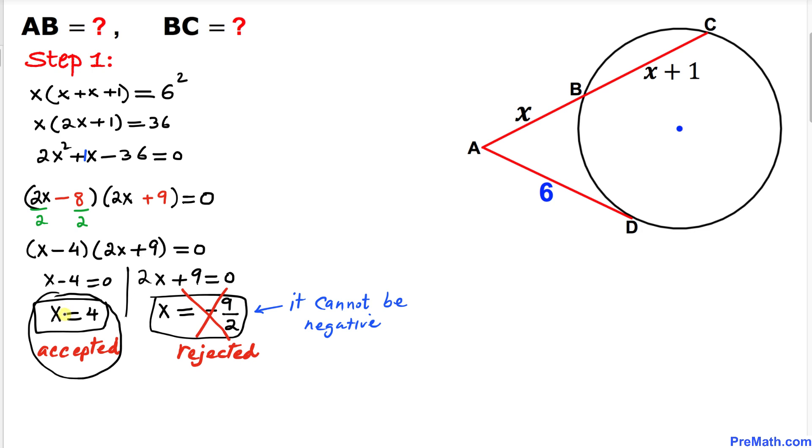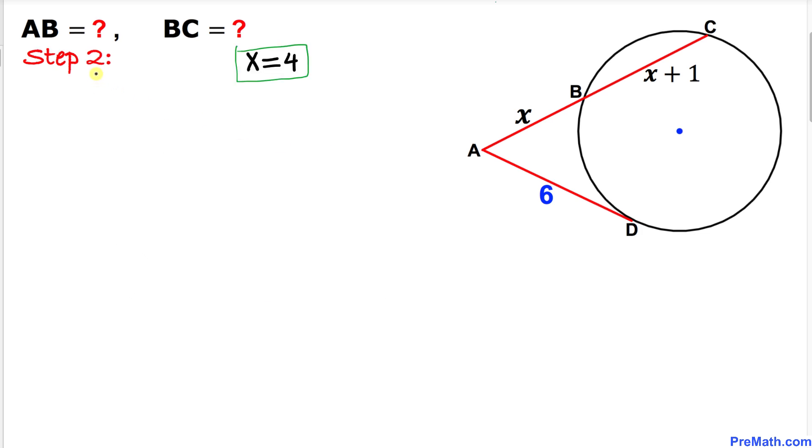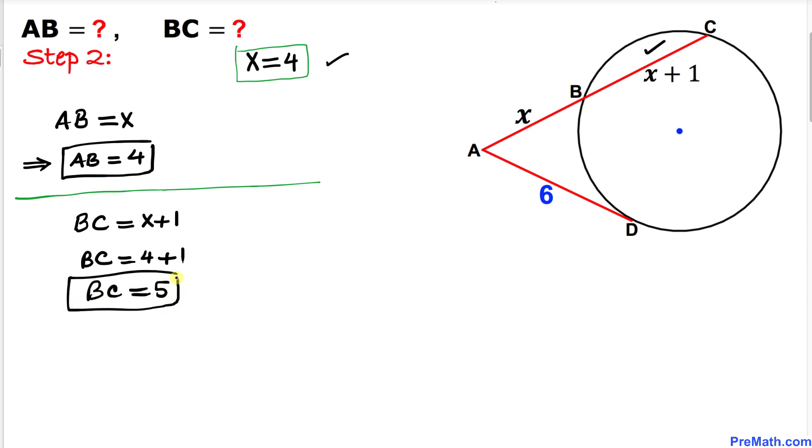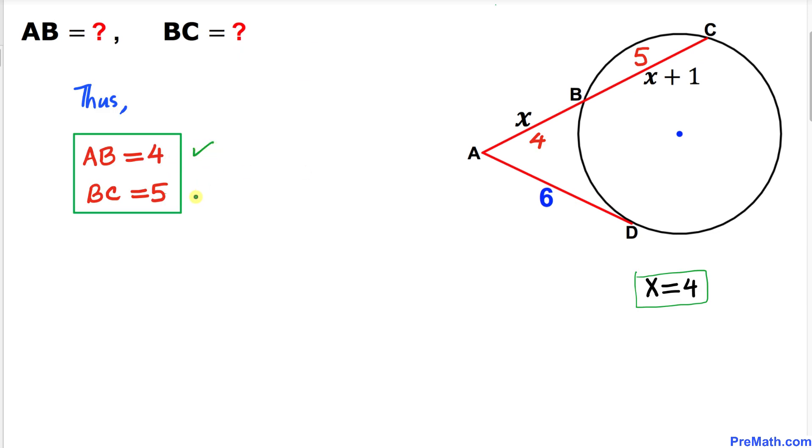Here's our final step: calculate AB and BC. AB length is simply x, and x equals 4, so AB equals 4 units. Segment BC is x plus 1. Since x equals 4, BC is 4 plus 1, which equals 5. Thus, AB equals 4 and BC equals 5 units.